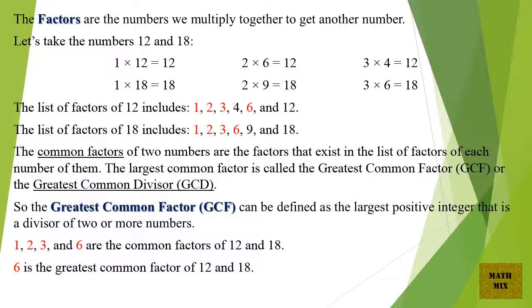And the list of factors of 18 includes: 1, 2, 3, 6, 9, and 18. (From the pairs: 1×18, 2×9, and 3×6.)